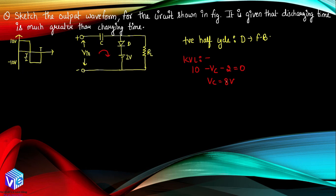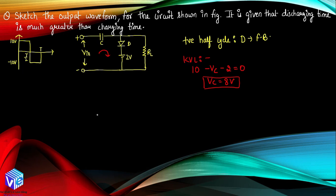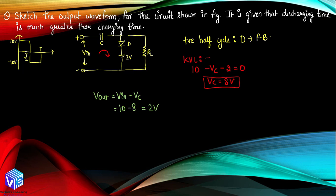V_output equals V_in minus V_C. V_in is 10, V_C is 8, so V_output equals 2 volt during the positive half cycle. During the negative half cycle, the diode becomes reverse biased, acting as an open circuit, and current flows through the R_L path instead.